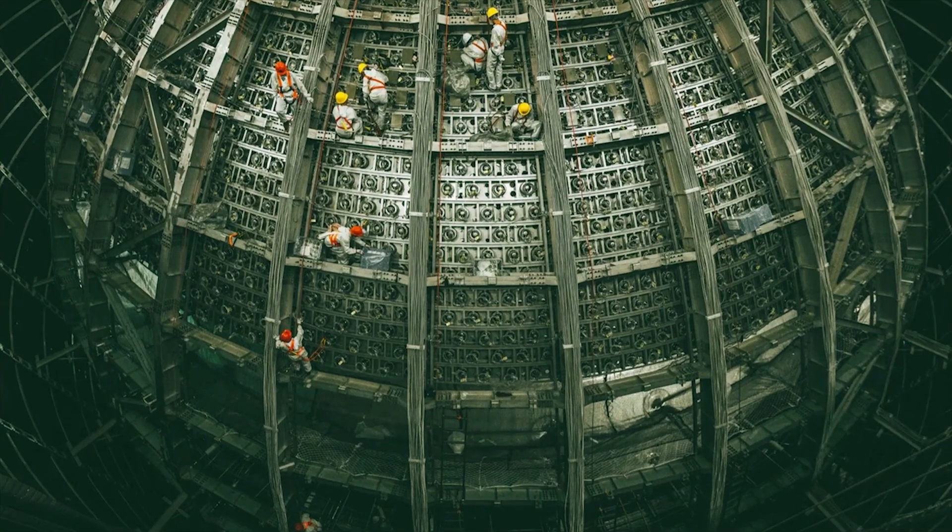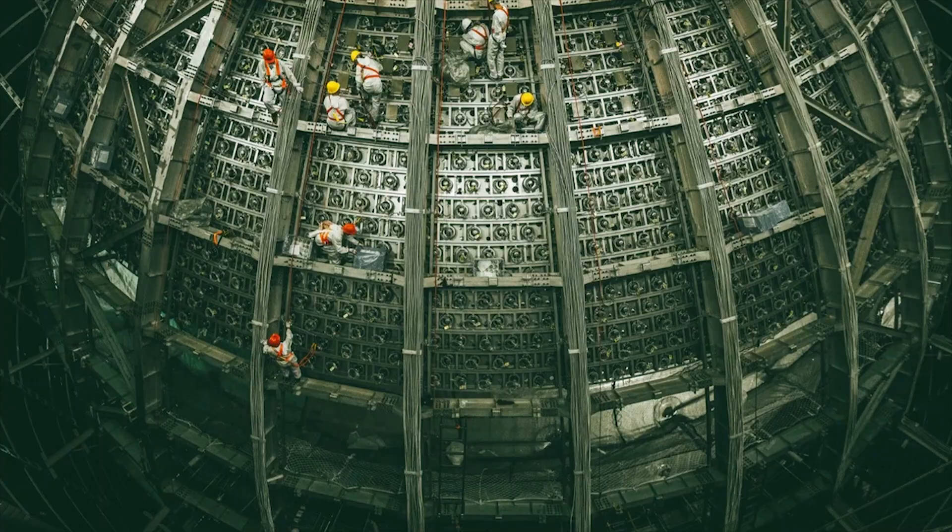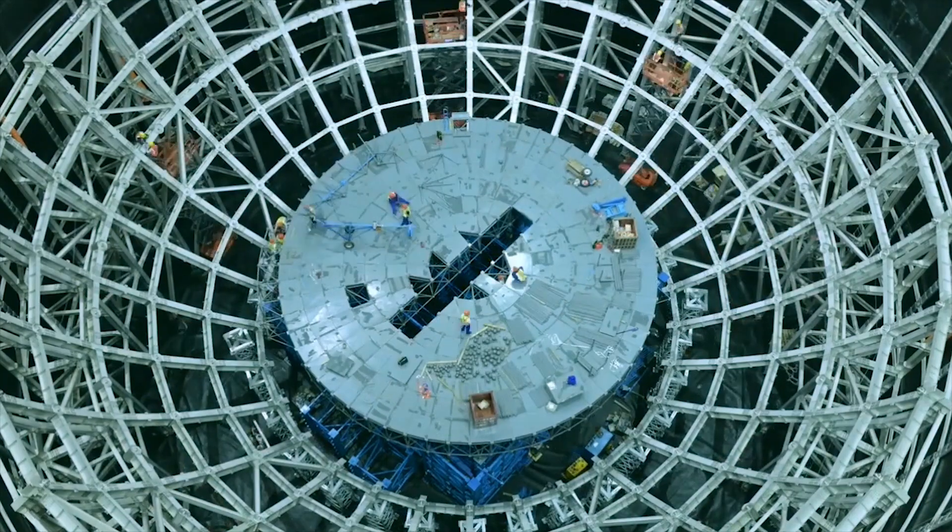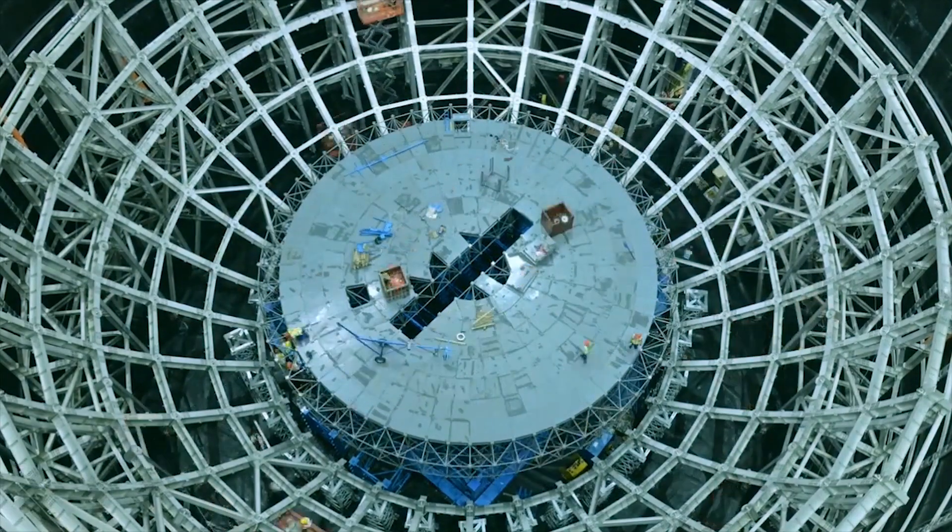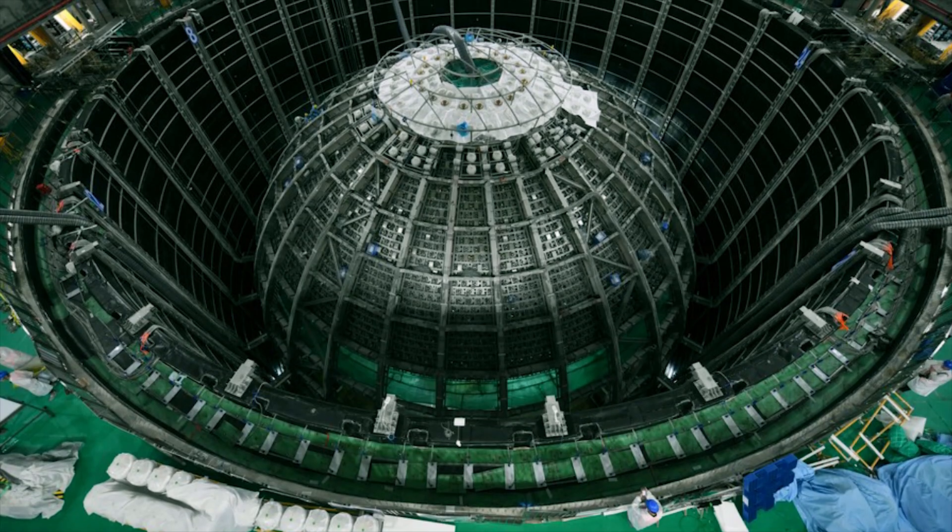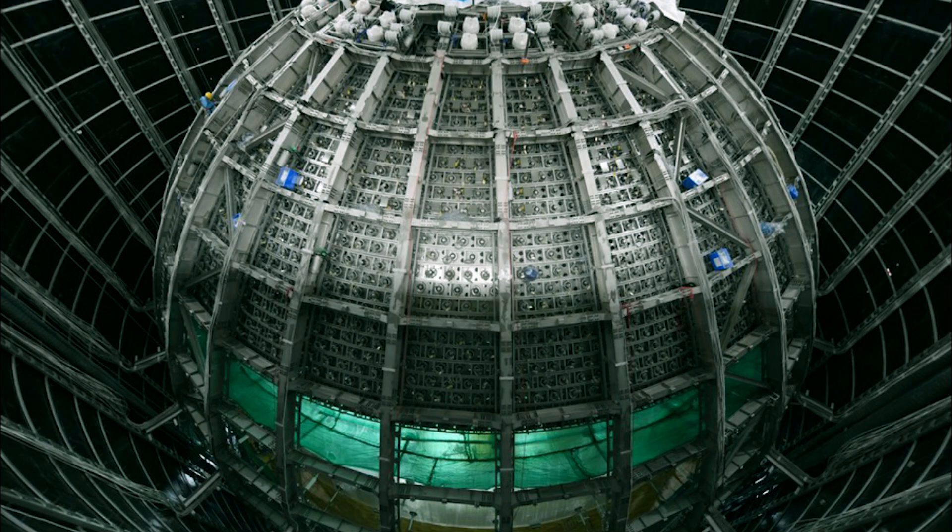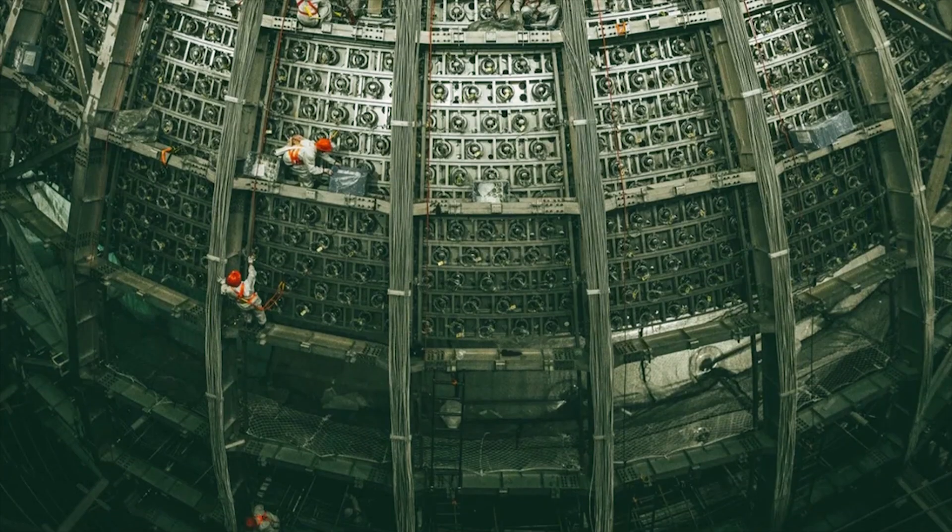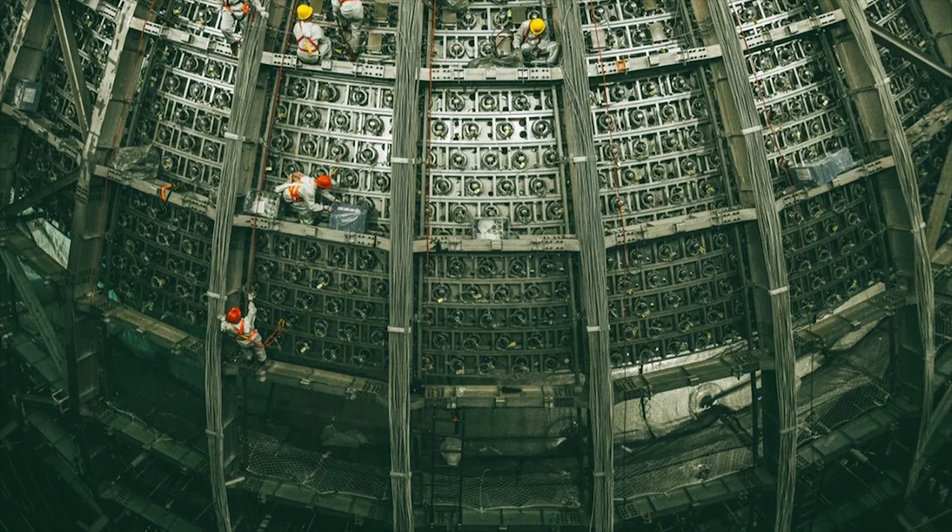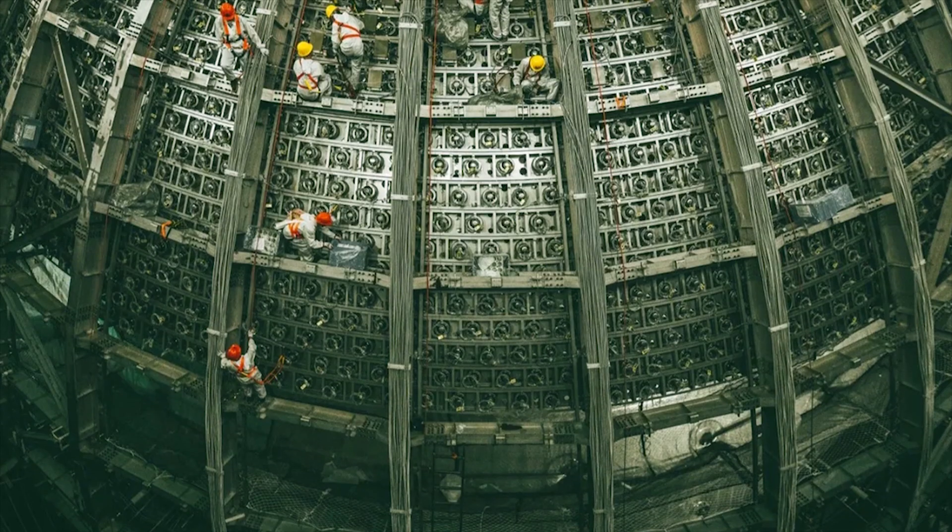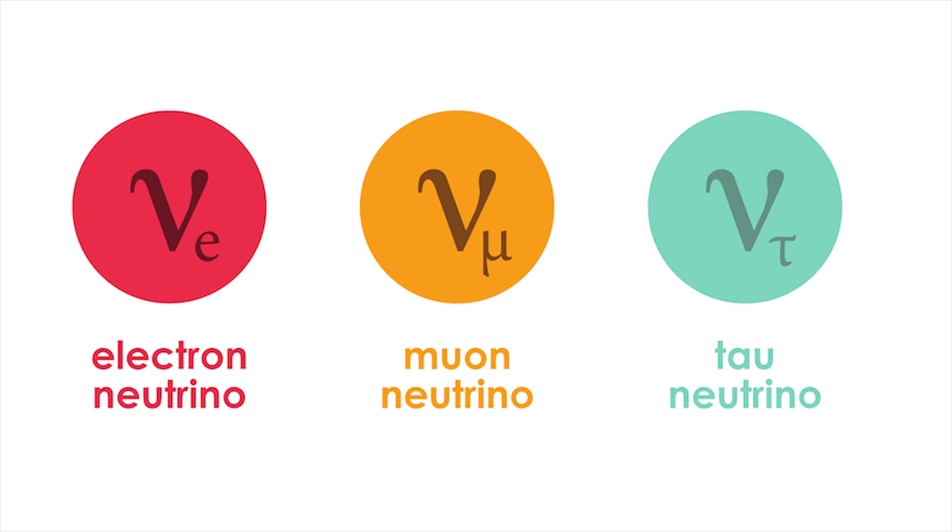China's Jiangmen Underground Neutrino Observatory, or JUNO, seeks to detect neutrinos with unprecedented sensitivity. Its 35-meter-wide orb-shaped detector is a large vessel filled with liquid for neutrinos to interact with. It would be the world's largest and most sensitive neutrino observatory, capable of detecting even the slightest changes in neutrino states.